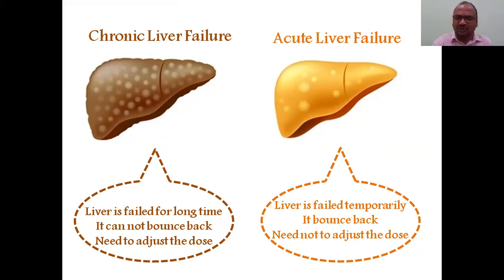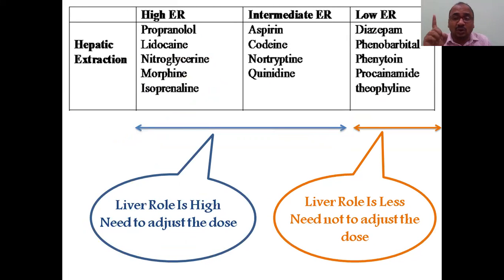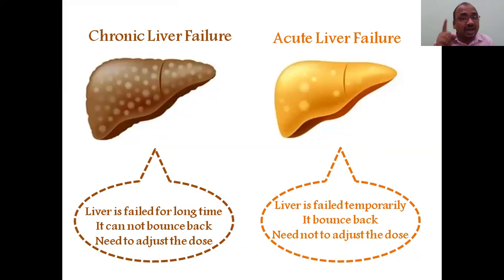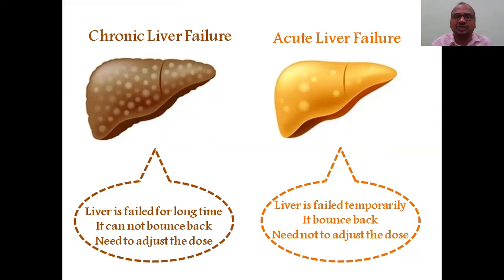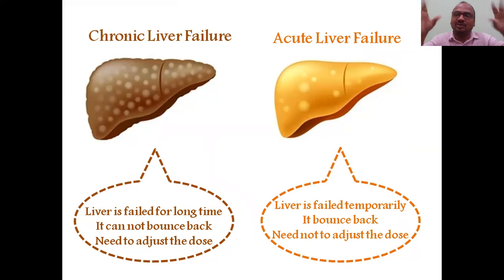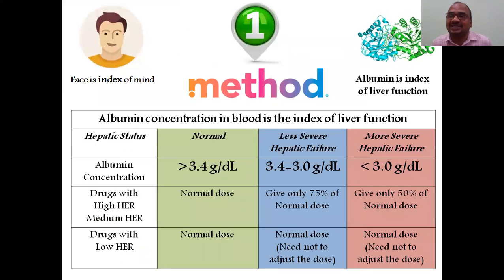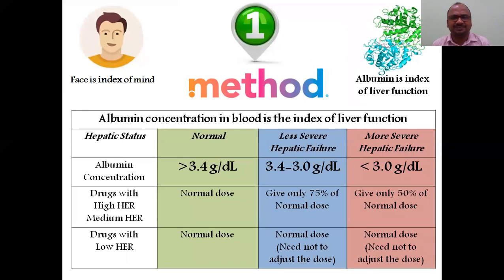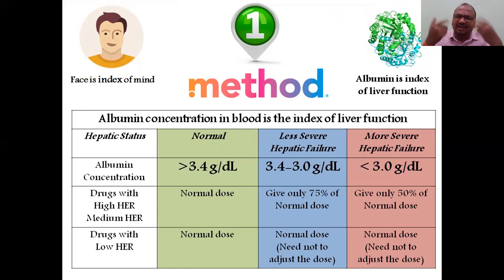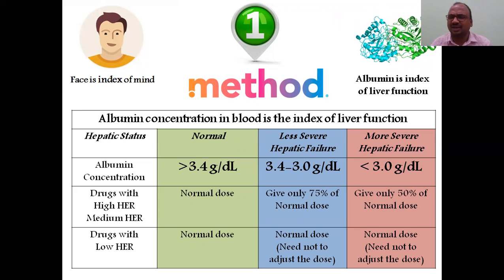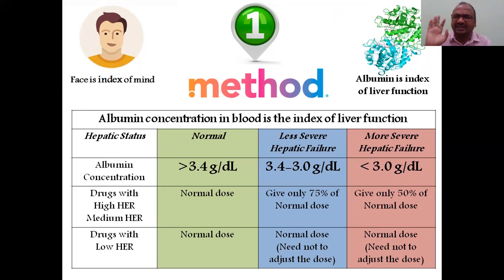Two options to keep in mind: if the drug belongs to low ER, no need to adjust the dose. If the liver is in acute failure, no need to adjust the dose. You must adjust the dose only when it is a high or moderate hepatic extraction ratio drug and the liver failure is chronic. There are two methods — method one has no calculation at all; you directly find the answer from a table.